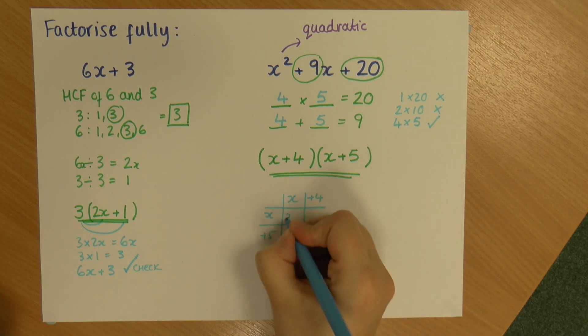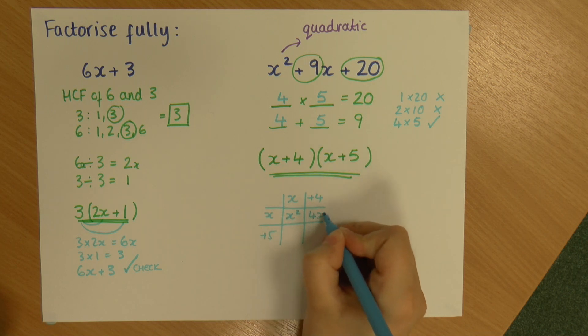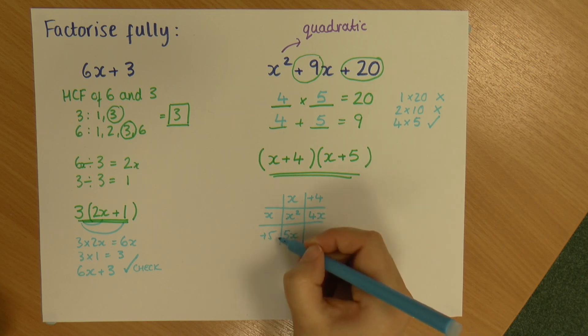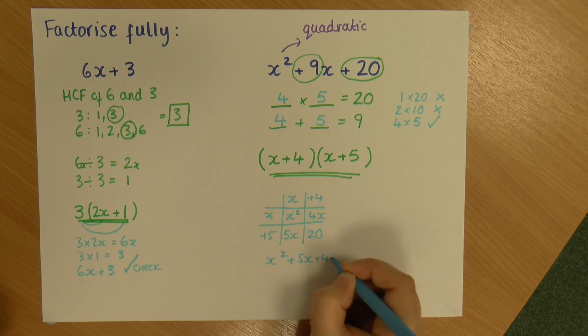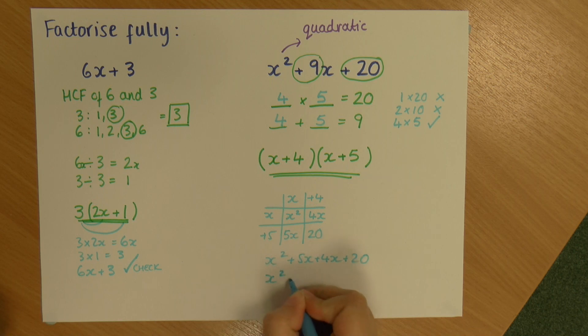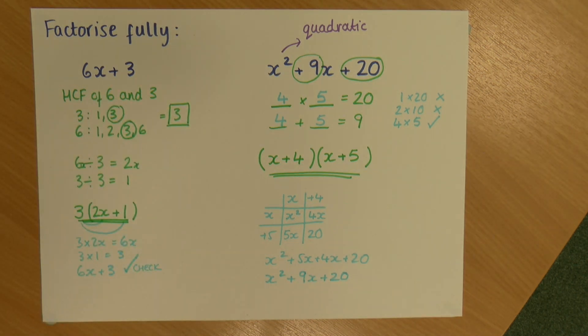So x times x is x squared. x times 4 is 4x. x times 5 is 5x. 5 times 4 is 20. Which gives me x squared plus 5x plus 4x plus 20. Which I can simplify to x squared plus 9x plus 20, which is the original thing I started with.